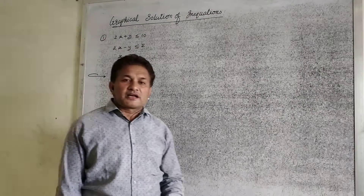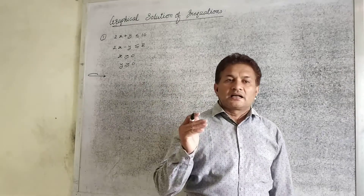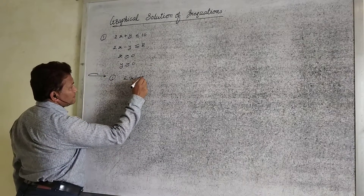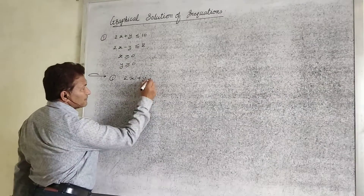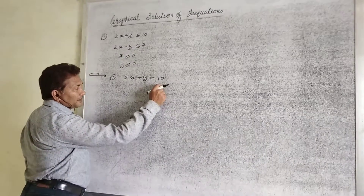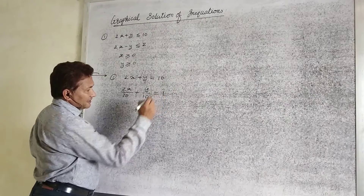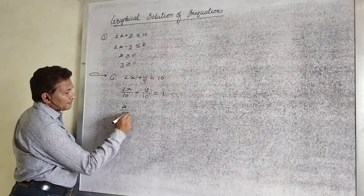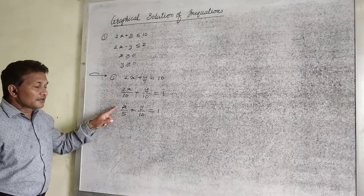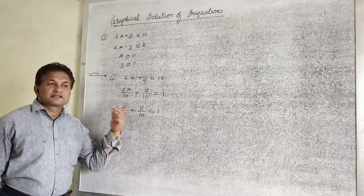Today, to find the points we are using the straight line method, specifically the intercept form. The first linear inequality is 2x plus y. First we convert it into an equation: 2x plus y equal to 10. In intercept form, we divide by 10 to get 2x divided by 10 plus y divided by 10 equal to 1. Hence x divided by 5 plus y divided by 10 is equal to 1. This is the intercept form, so the line intersects the x-axis at 5 and the y-axis at 10.